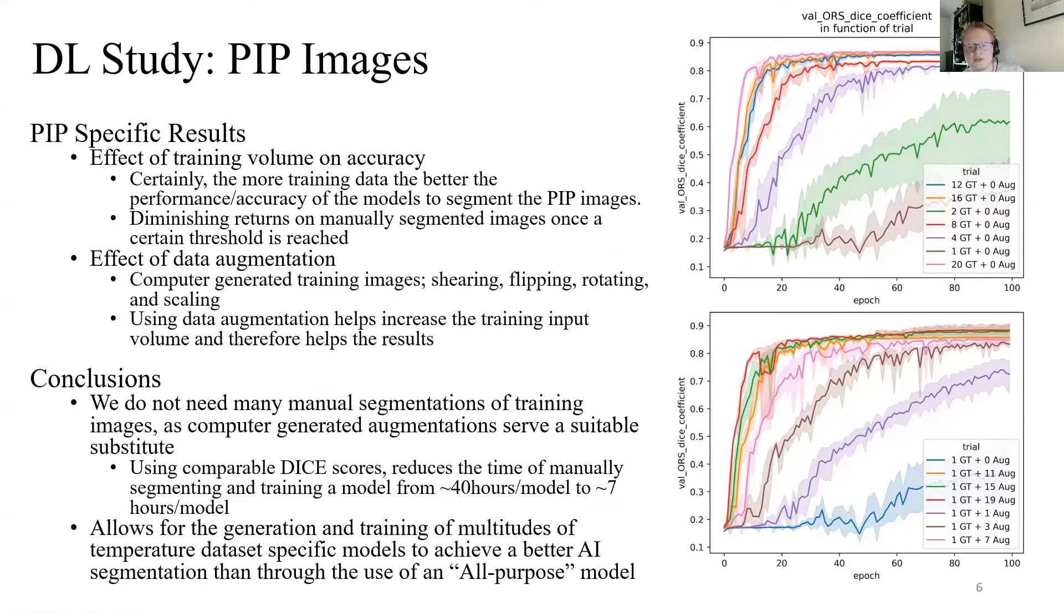Data augmentation is essentially computer-generated training volume. By taking the input training images and either shearing, flipping, rotating, or scaling the original images, the computer provides de facto free training data to the AI model.